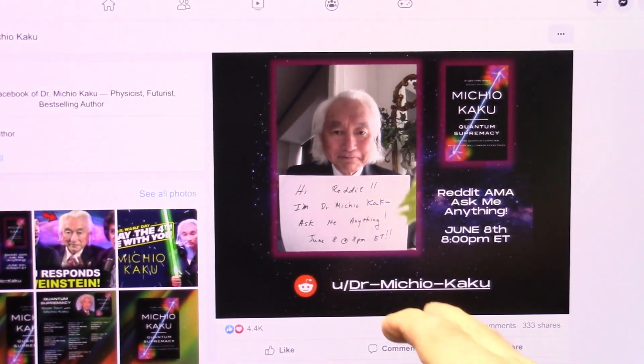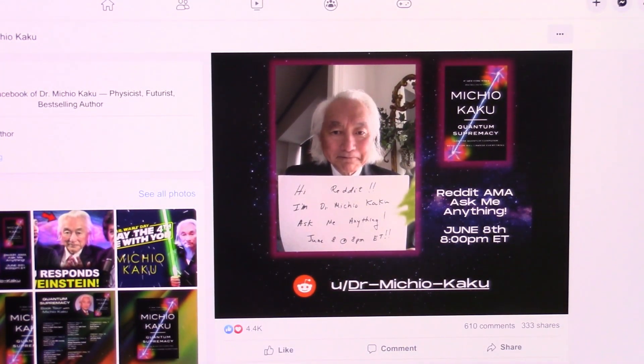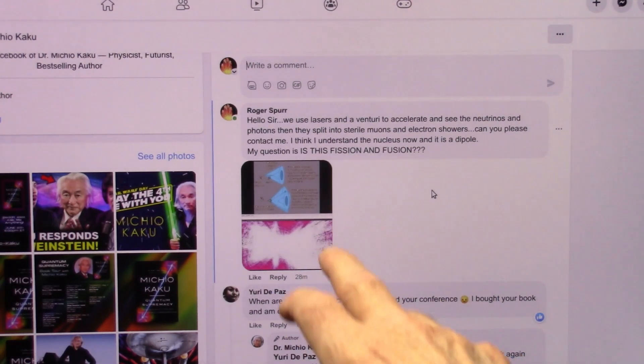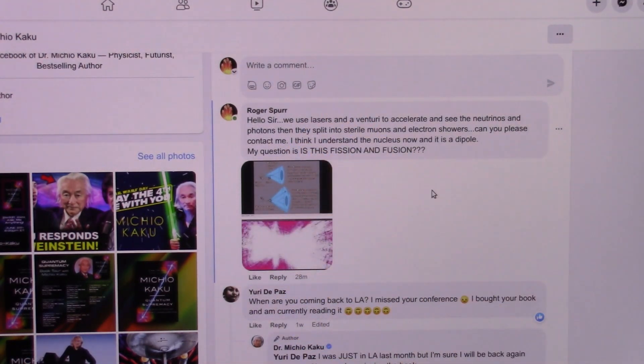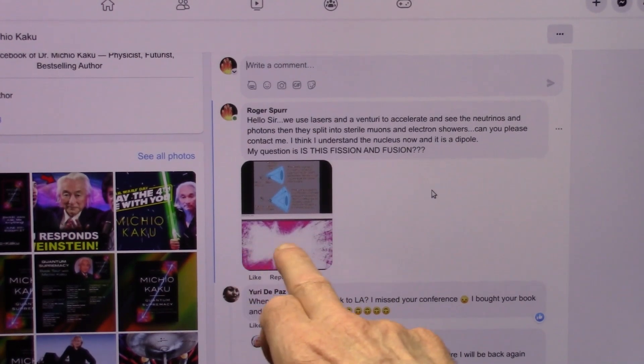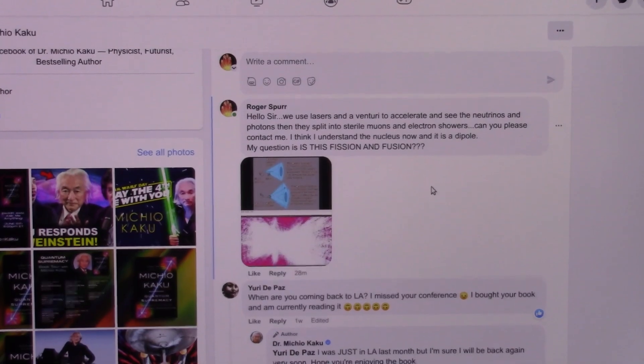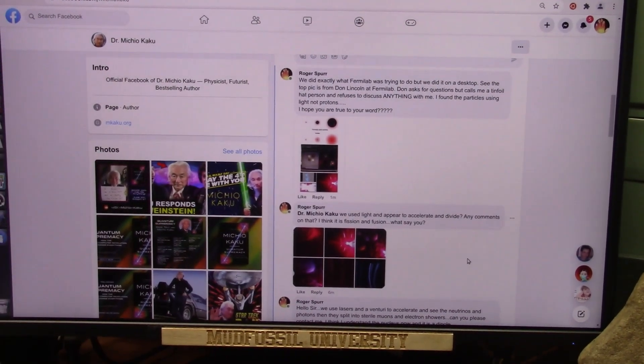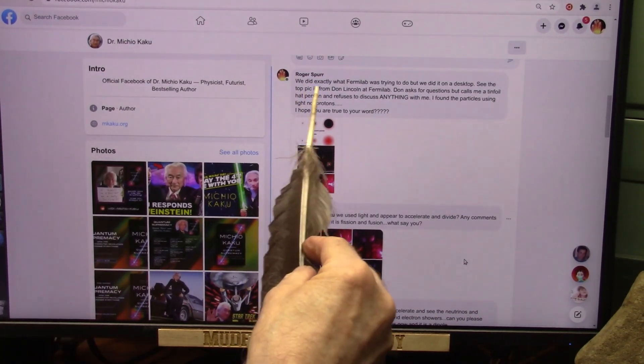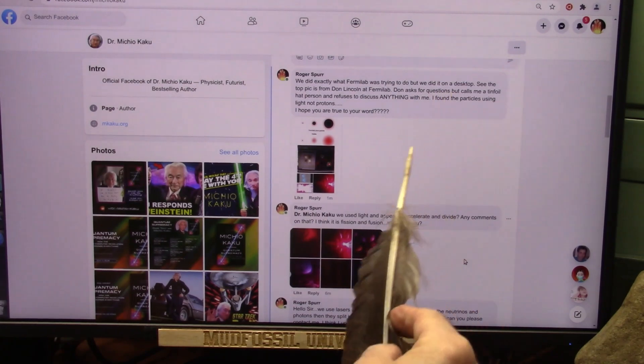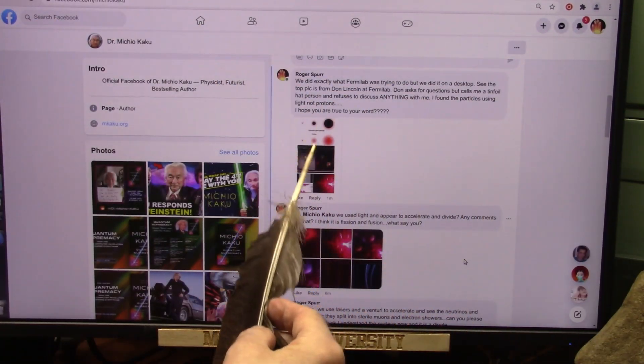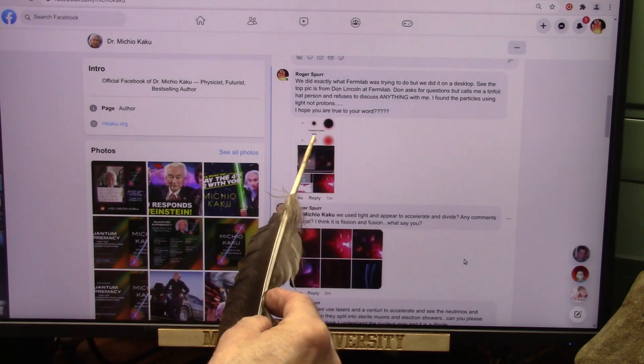I missed a date on this, this was a week or so ago, but he says you can ask him anything. So I am asking Dr. Kaku, please will you engage with me? I said, hello sir, we use lasers and a venturi to accelerate and see the neutrinos and photons. Then they split into sterile muons and electron showers. My question is, is this fission and fusion? If we split them and then they come back together, that's the definition. I presented this to Dr. Kaku and I hope he will respond. I said we did exactly what Fermilab was trying to do, but we did it basically on a desktop instead of these huge colliders.